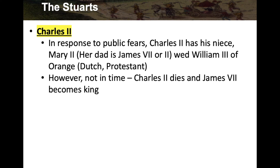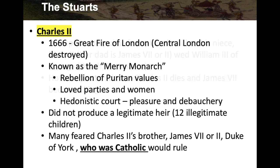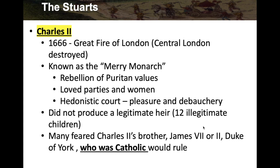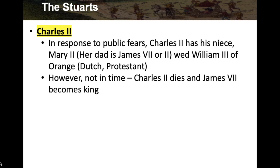In response to these public fears, Charles II had his niece Mary II — whose father was James VII or II — wed William III of Orange, who was Dutch but Protestant. The king basically set his niece up with a foreign prince to ensure a Protestant succession. However, this did not happen in time: Charles II died and James VII — who was Catholic — became king anyway.